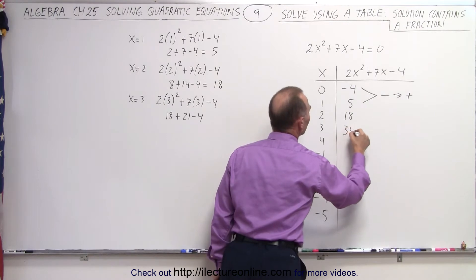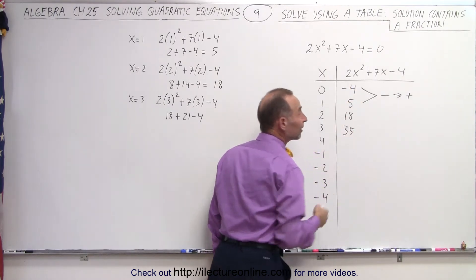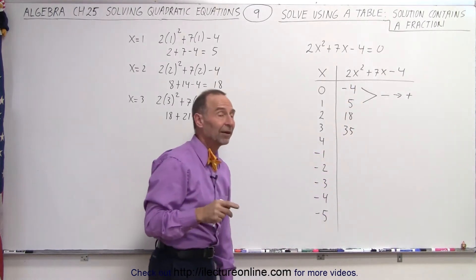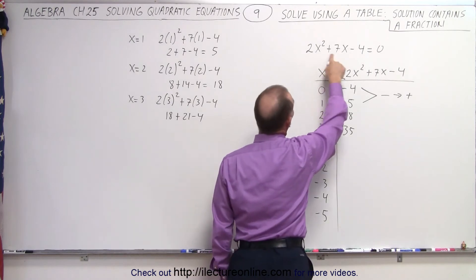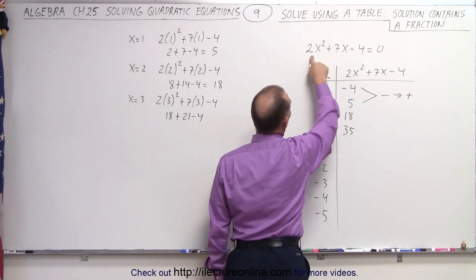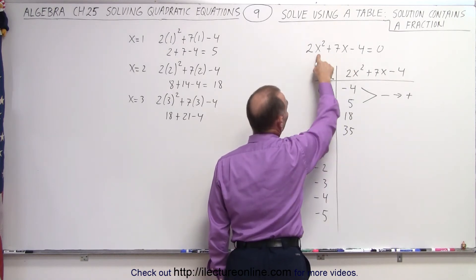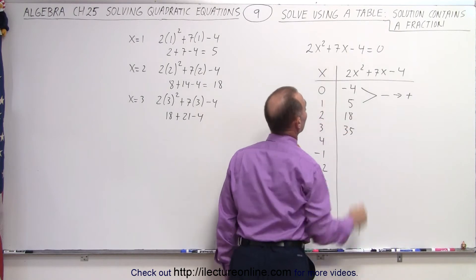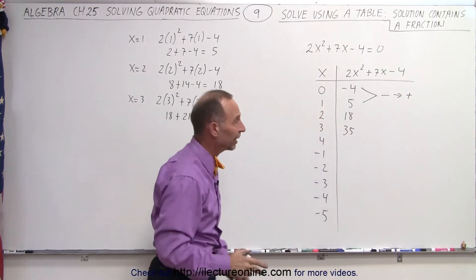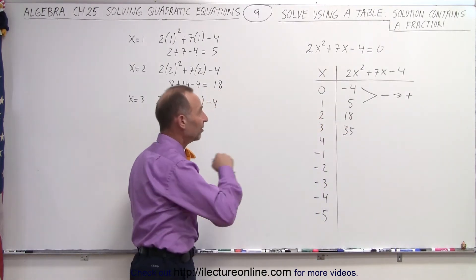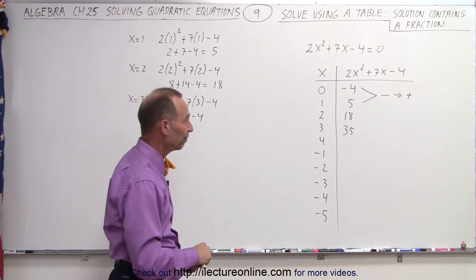Notice the values get bigger and bigger. It doesn't look like the result will ever get back to 0, because the first two terms are always positive when plugging in a positive x, and we're only subtracting 4. So the expression only gets bigger as x gets bigger — no need to try x=4 or beyond.